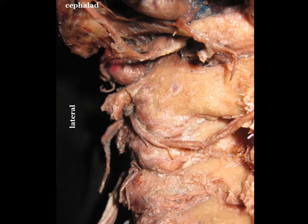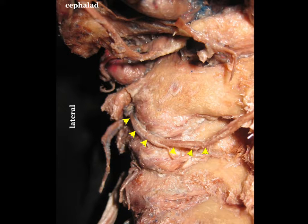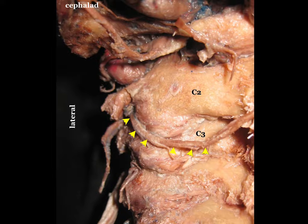Another important part is the fact that the third occipital nerve is crossing the joint space of C2-C3 right on top. That means this nerve is lying on top of that joint. And for better visibility,